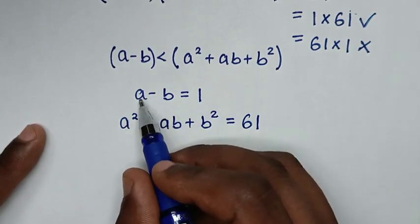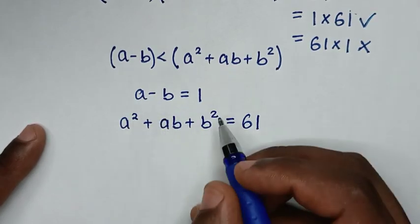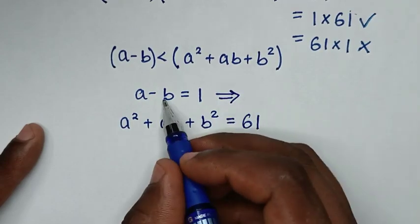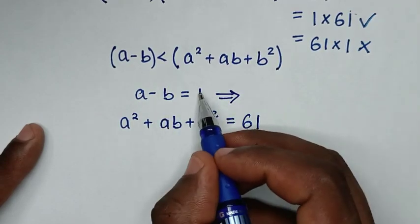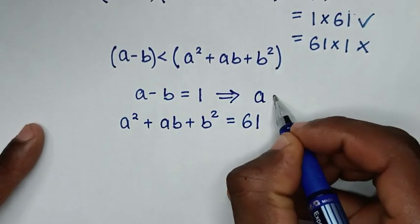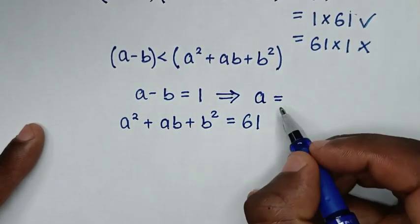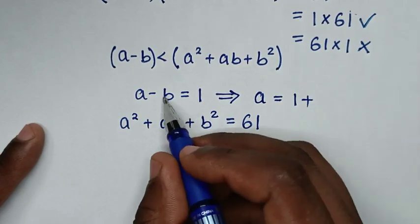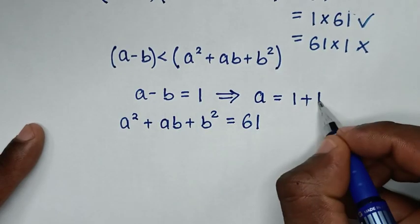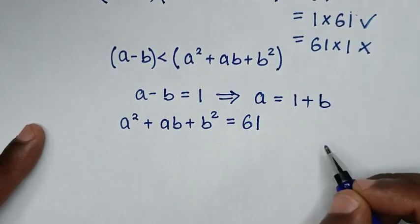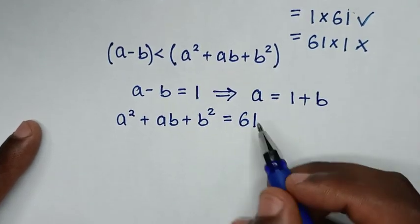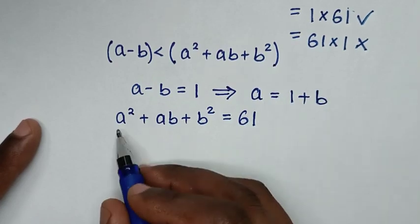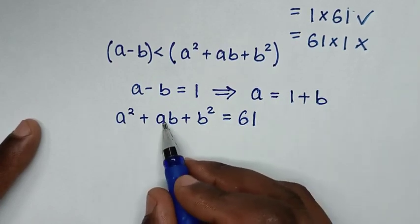From the first equation, we make a the subject. Taking negative b to the right side gives a is equal to 1 plus b. We then substitute this value of a, which is 1 plus b, into the second equation.